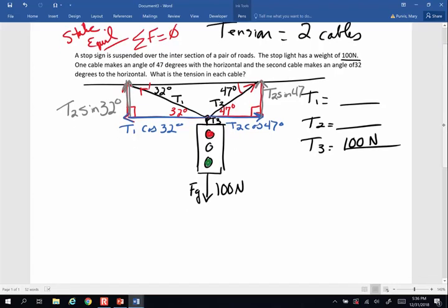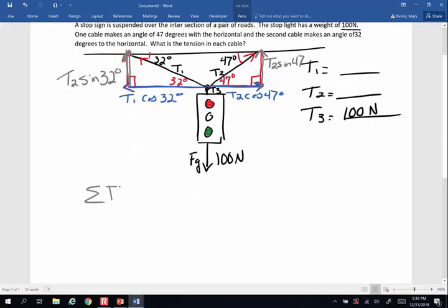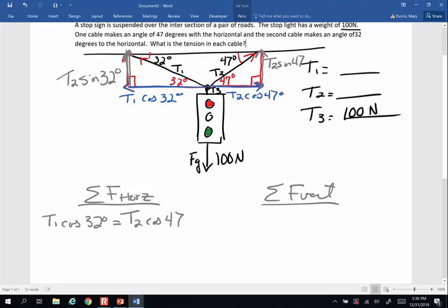Now we can sum our forces. So we're going to sum the forces horizontal, and we are going to sum the forces vertically. Now horizontally, all of the left stuff has to equal all the right stuff, so T1 times the cosine of 32 equals T2 times the cosine of 47. So the left vector equals the right vector.